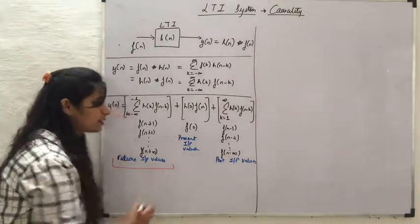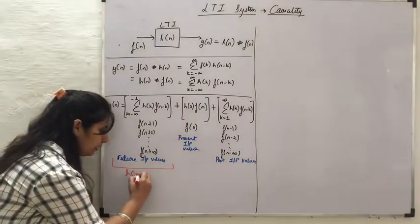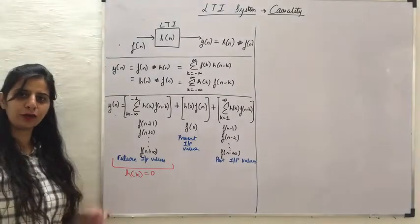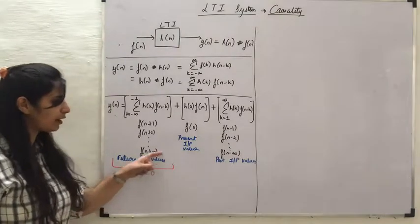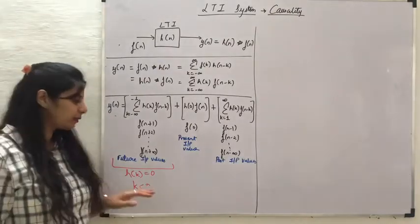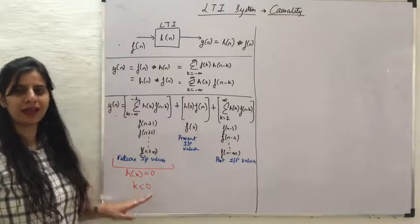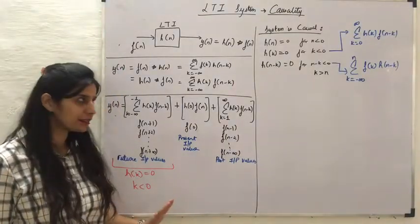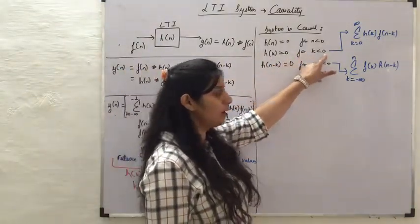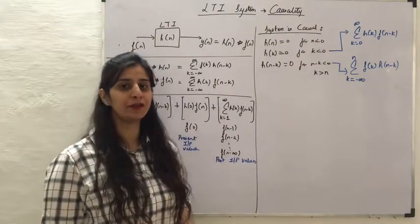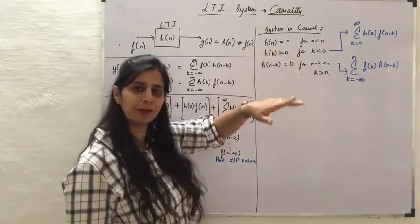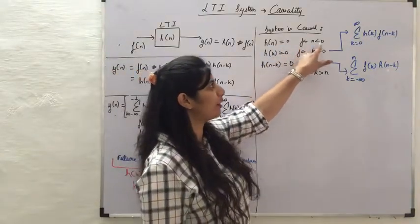From the definition of a causal system, the output response should depend only on the present and past values. So when the system is causal, H(K) should be equal to 0 for K less than 0, because we do not want it to respond to future values of the input — which occur where K is less than 0. So for a causal system, H(K) equals 0 for K less than 0, or equivalently H(N) equals 0 for N less than 0.